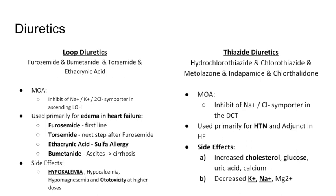The next step is torsemide — it's a little bit stronger, so the dosing is a lot less and you'll have a lot more diuretic effect. Ethacrynic acid is a very important high-yield fact: this is the one we use if the patient has a true sulfa allergy. Furosemide and torsemide both have sulfa in their chemical structure, so we use ethacrynic acid in that case.